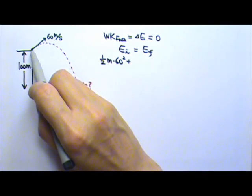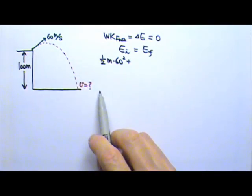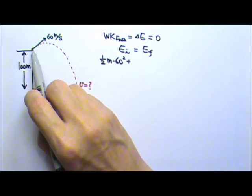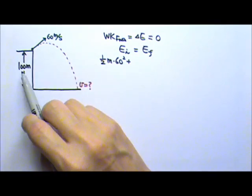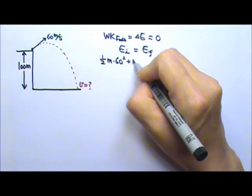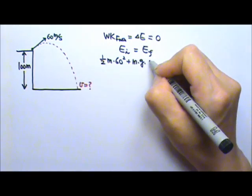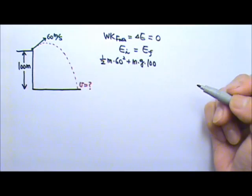Now it is also up high. If I choose this is the ground, then the height at the beginning is 100 meters. So there is mgy, so the mg and the y, the height is 100 meters.